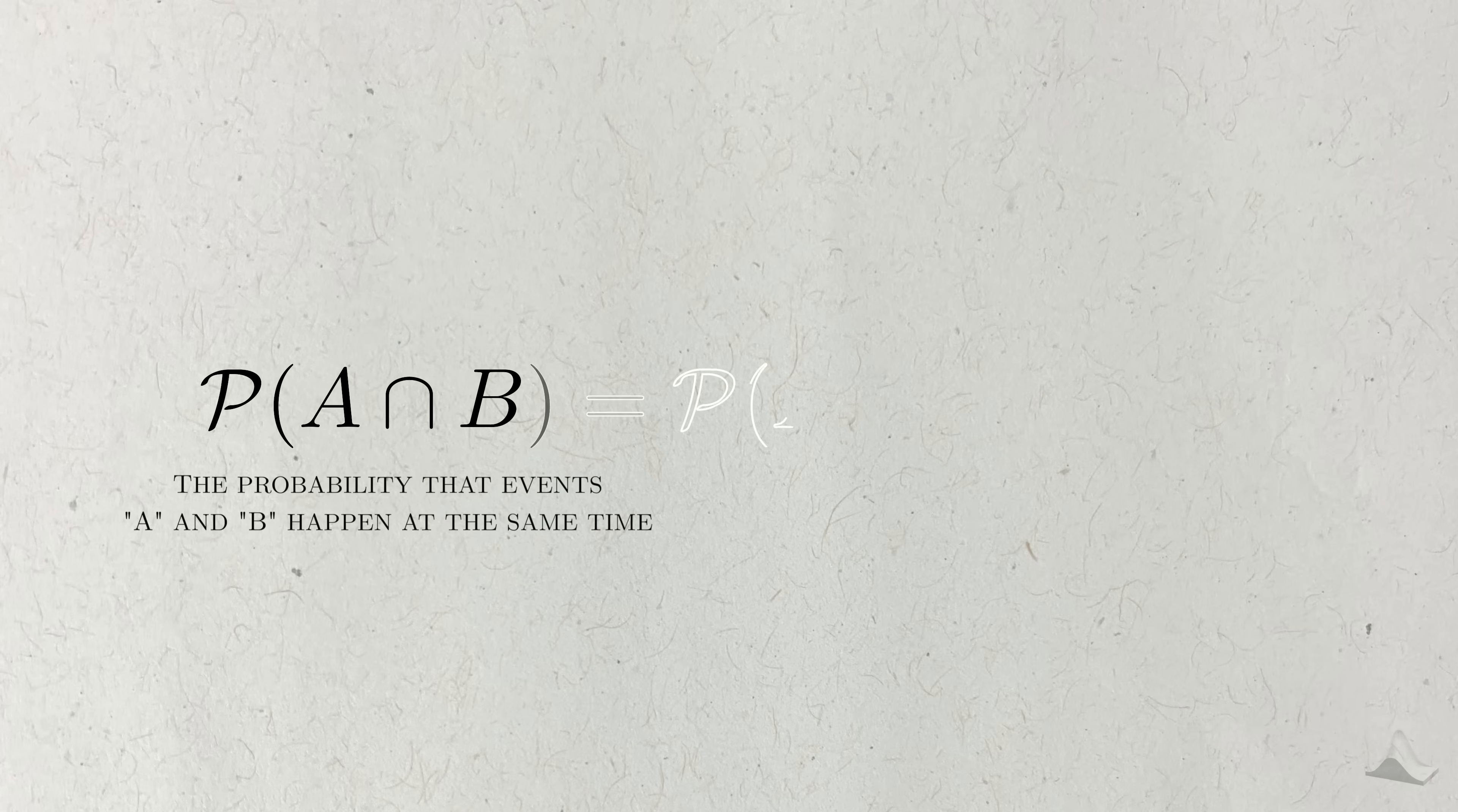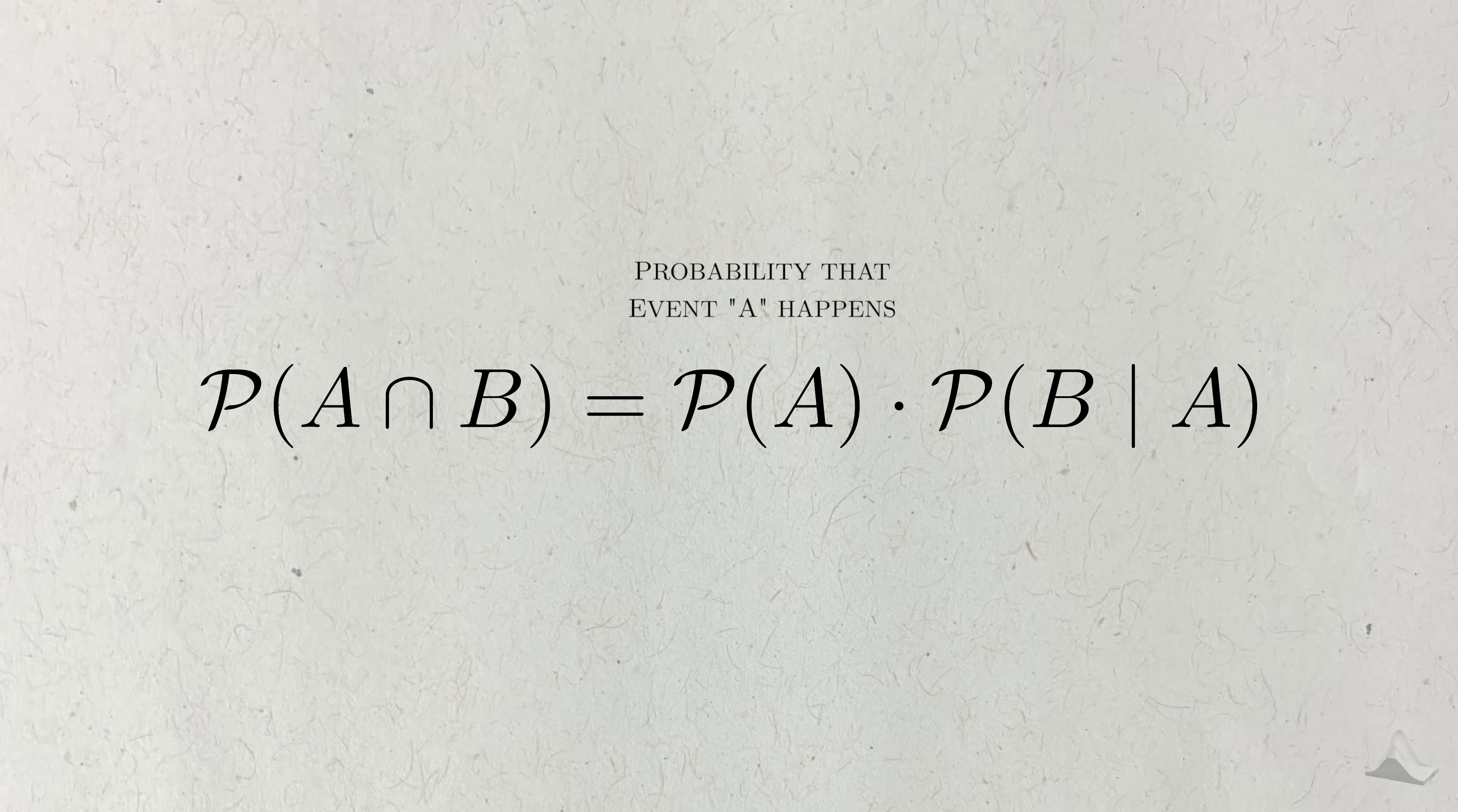And we can do this with the classic probability calculation. The probability that two events, A and B, happen at the same time, can be calculated as the product of the probability of the first event happening, and the conditional probability of the second event, given the first one happened.